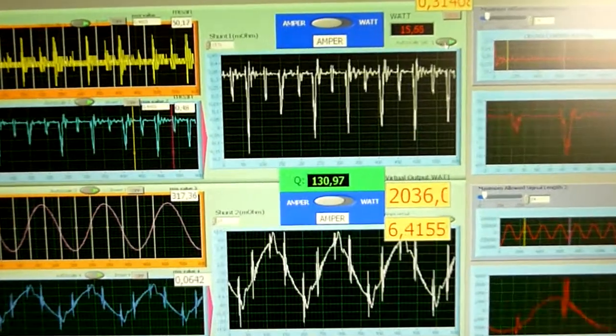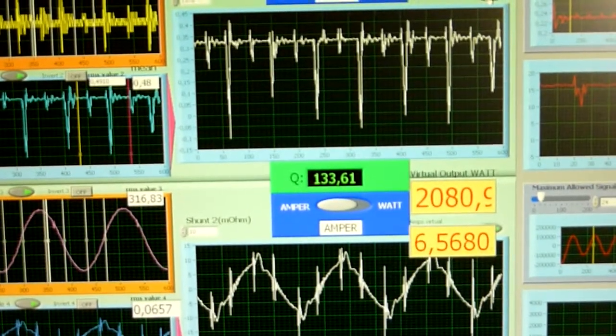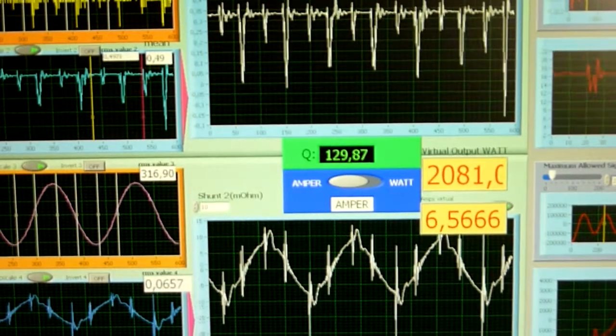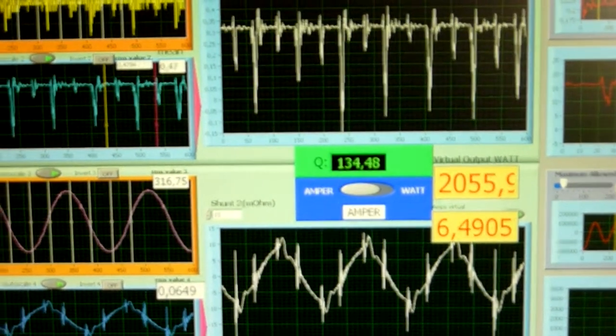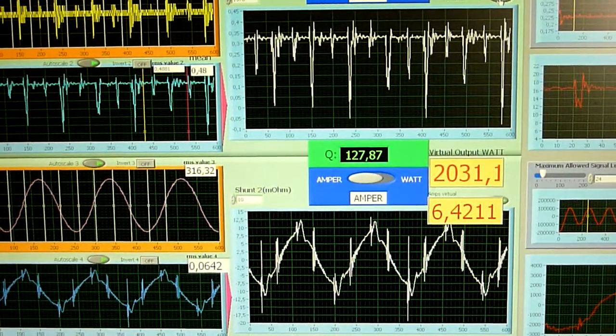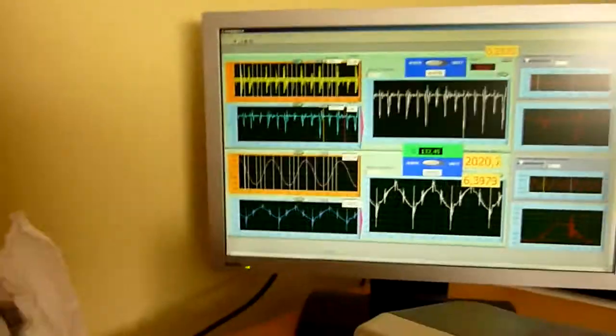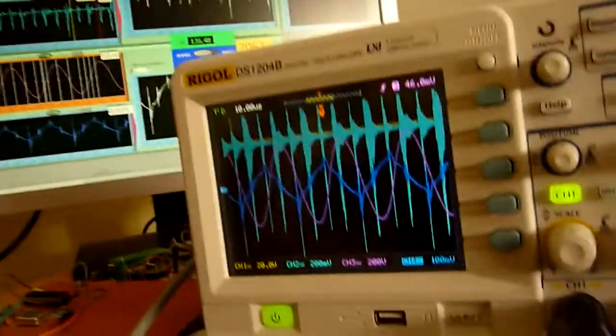As you can see, the Q increases at least a bit. Now we are talking about 130 times output voltage, or circulating output voltage, compared to the input voltage. I will try to increase the voltage even a bit more.